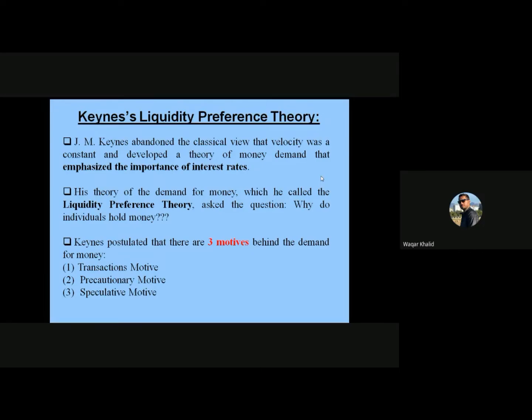J.M. Keynes was the most influential macroeconomist who presented his theory known as Keynes's liquidity preference theory, which is the most important theory in macroeconomics. Keynes abandoned the classical view that velocity was a constant and developed a theory of money demand that emphasizes the importance of interest rates.